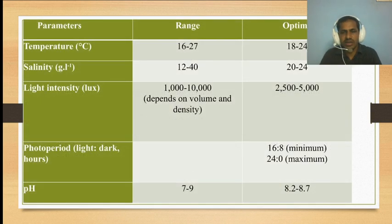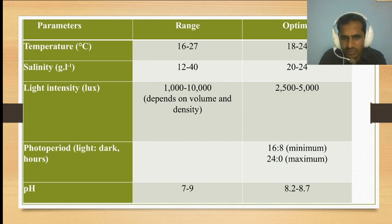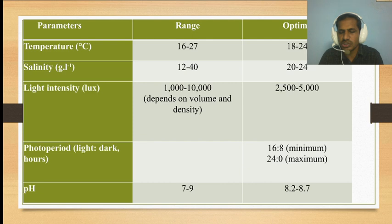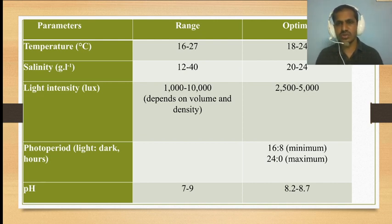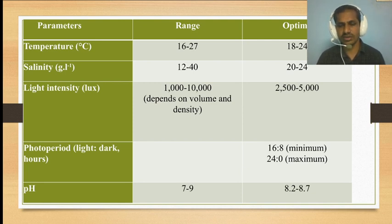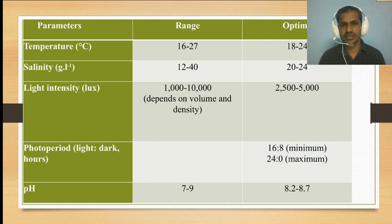When you want to grow algae, they require specific conditions. We need to maintain an optimum temperature of 18 to 24°C and salinity of 22 to 24 grams per liter. Light intensity required is 2000 to 5000 lux for algal growth. The photoperiod is based on light and dark hours — 16 hours light and 8 hours dark, or 24 hours light for some species like Chlorella. The pH to be maintained is 8.2 to 8.7.